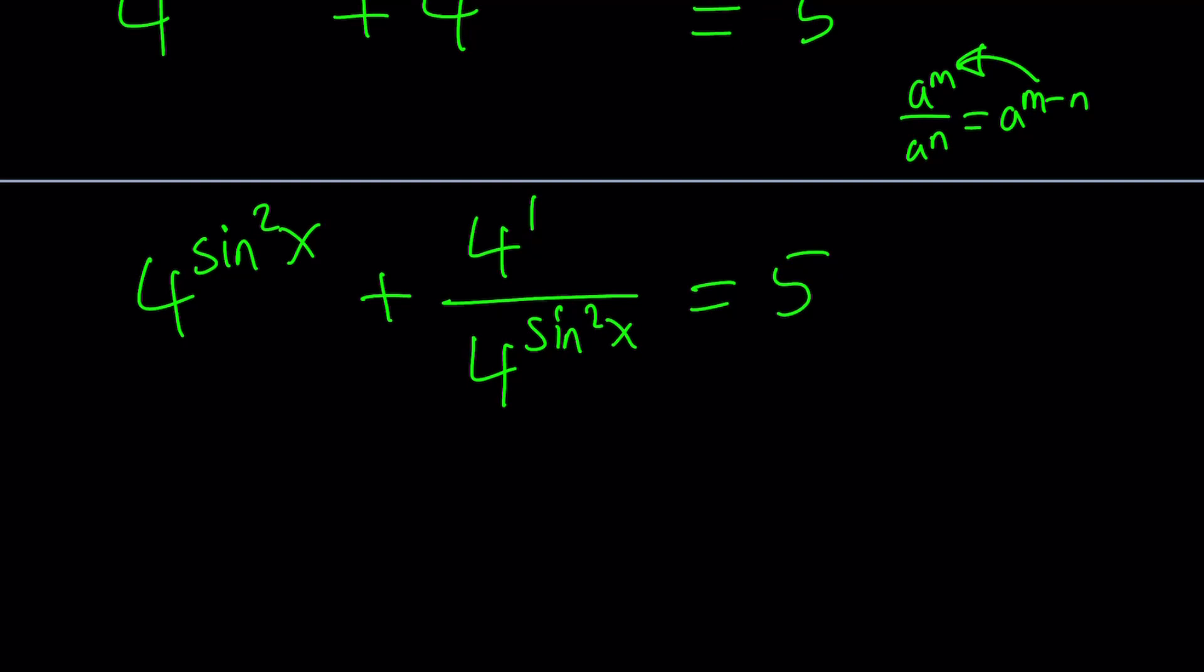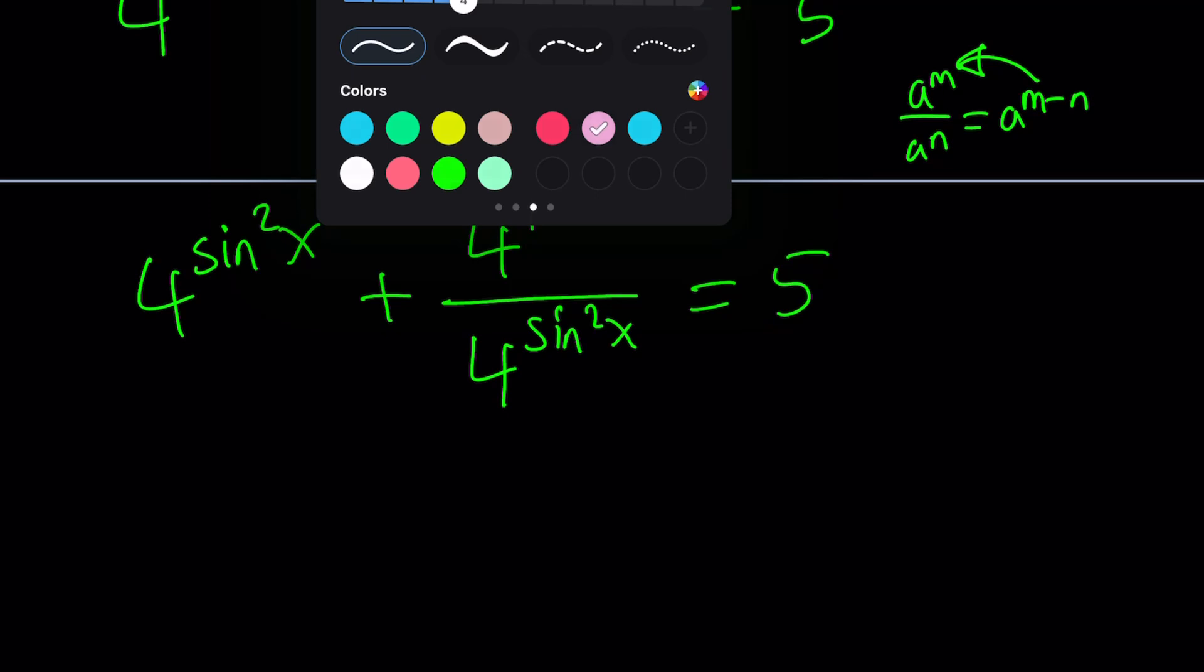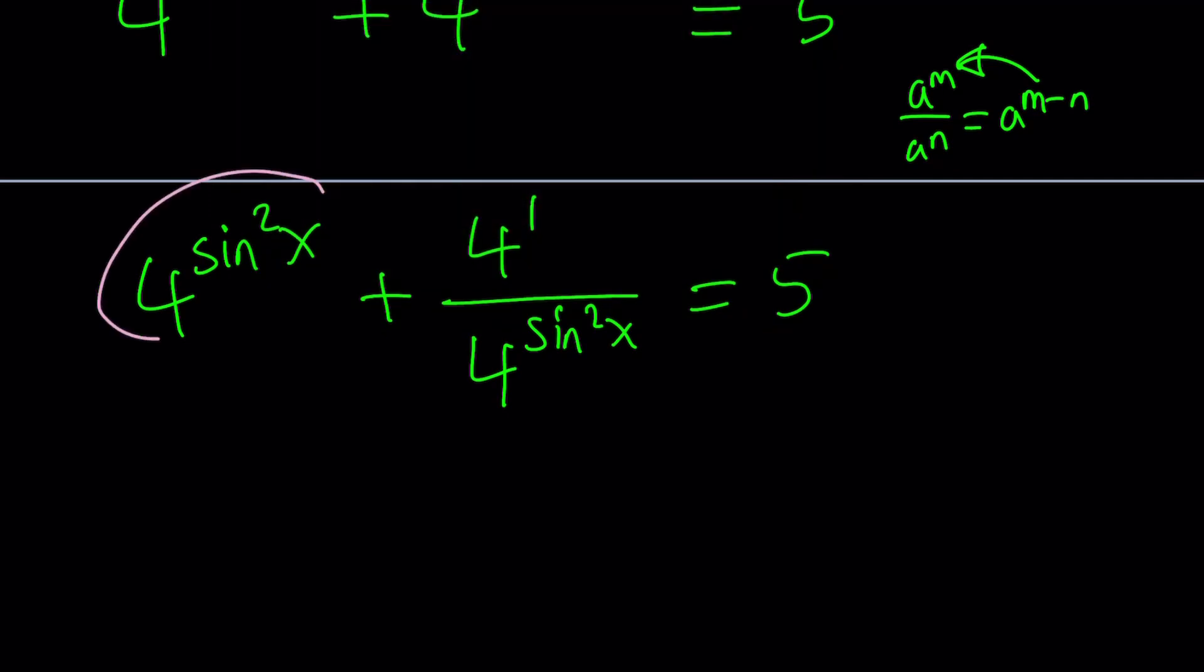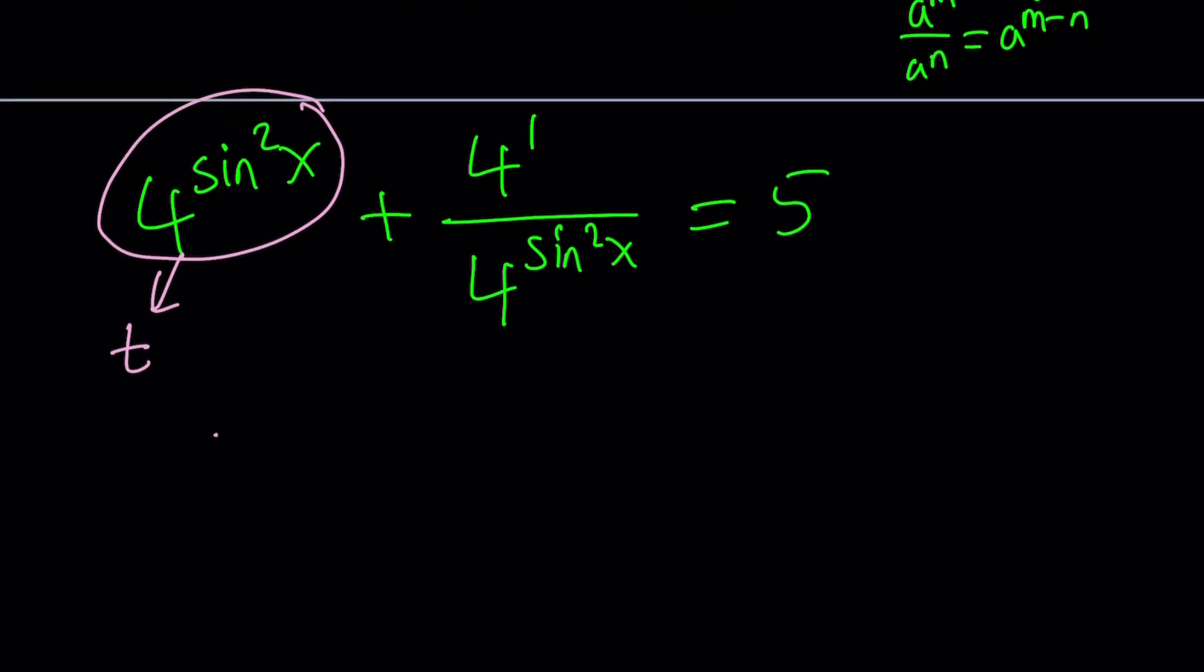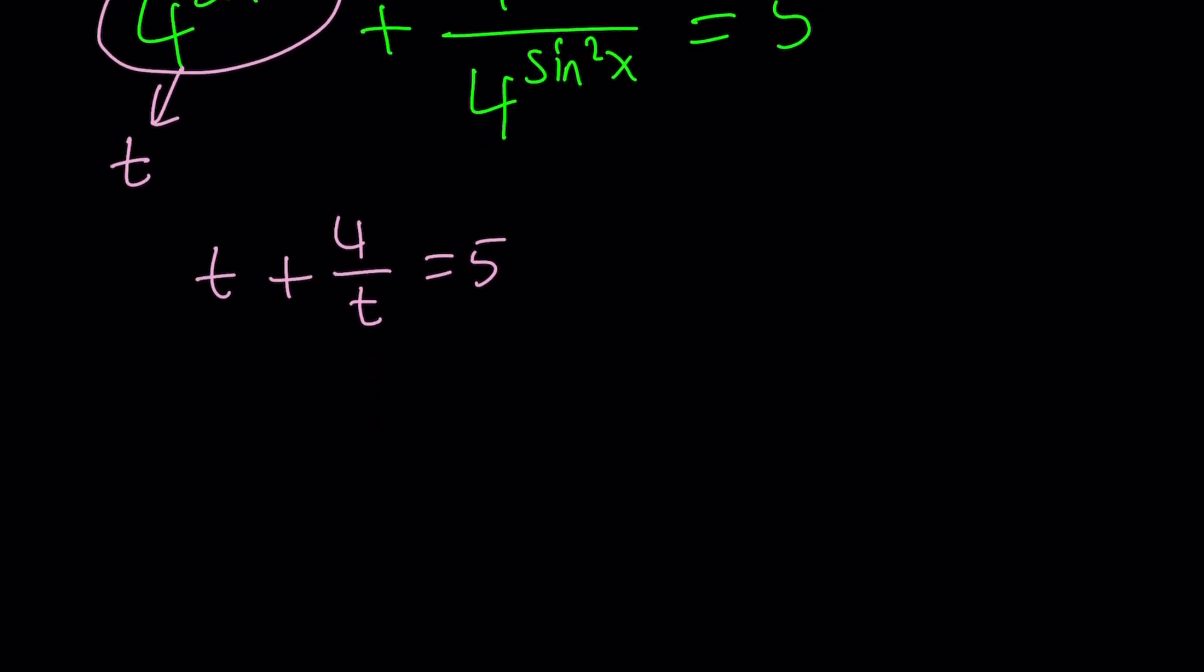Now, we are going to do substitution. Substitution is going to be helpful. Let's go ahead and call this something. How about t? t plus 4 over t equals 5. And again, you can definitely guess at this point because this is going to turn into a quadratic equation. Very easy to solve. Let's go ahead and multiply everything by t. t not being 0, obviously. t squared plus 4 equals 5t. And then t squared minus 5t plus 4 is equal to 0.